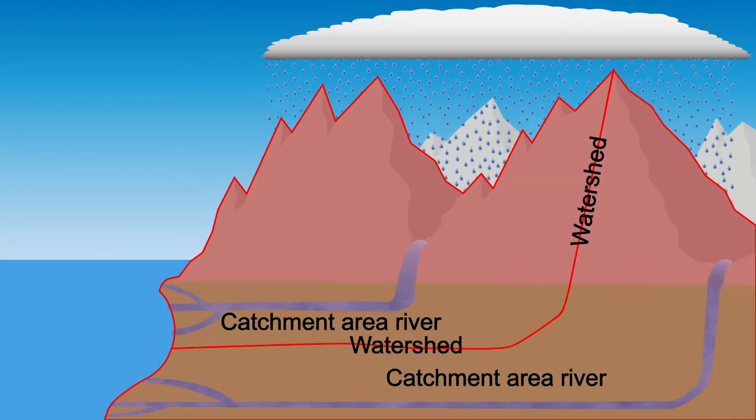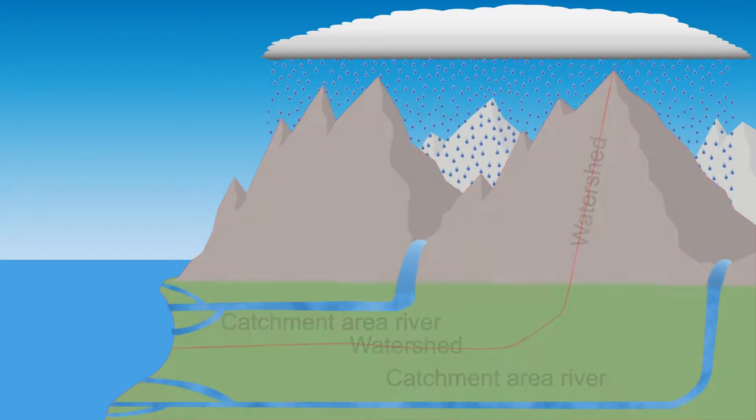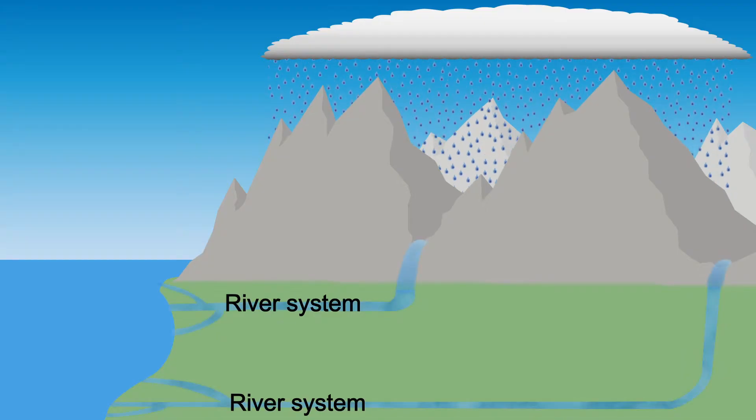Within the river basin lies the river system, the entire river including all its tributaries. All the water that is collected in the river basin is transported by the river to the sea. Along the way, the river changes the landscape.